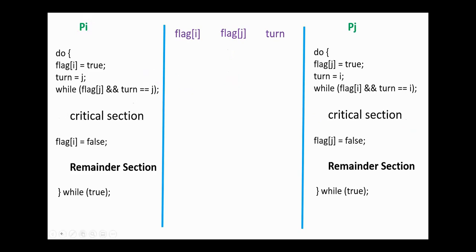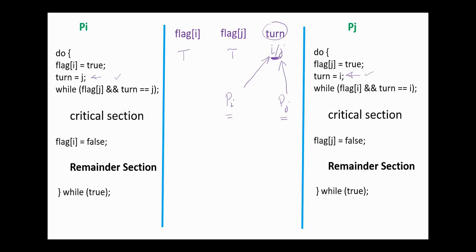One more case: suppose the two processes attempt at the same time to enter their critical sections. So flag[i] is set to true and flag[j] is set to true. Turn is set to j by Pi and to i by Pj — but turn is one variable and will take only one value, either i or j, depending on the order these instructions execute. So turn can be either i or j. If turn was set to i, then process Pi enters its critical section. Both processes cannot enter their critical sections at the same time; only one process can enter and the second must wait.